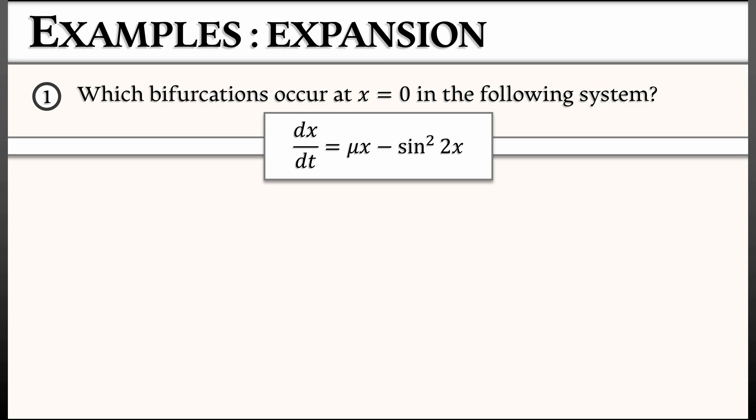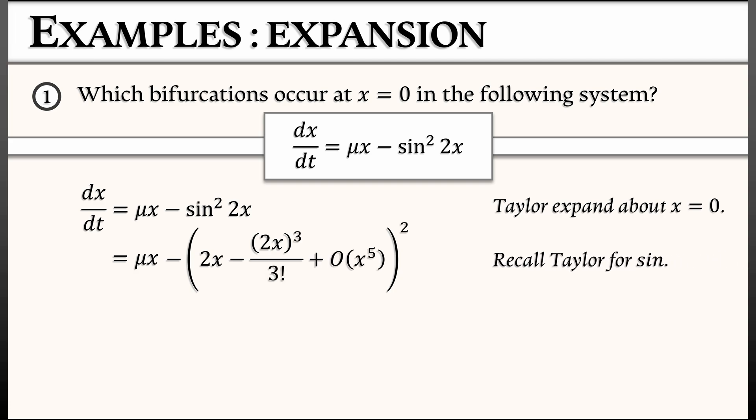Then what do we do? How do we do this? Well, write out that equation and then let's Taylor expand about x equals zero. Now the Taylor expansion of mu times x is just mu times x. What about sine squared of 2x? I'm going to take sine of 2x, which is quantity 2x minus 2x cubed over 3 factorial plus higher order terms, terms of order x to the fifth and higher.